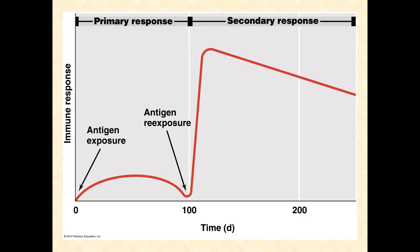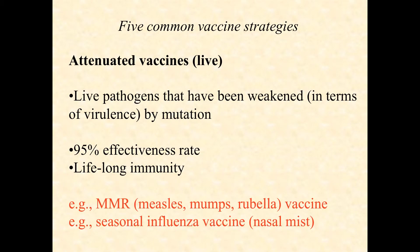This pattern is true whether it's a vaccine for your primary exposure or if it's the actual live pathogen that makes you sick. Therefore, what we're trying to do is skip that primary exposure and the illness that goes along with it, and prepare our immune system just for that secondary response that you see on the right. There are five common vaccine strategies.